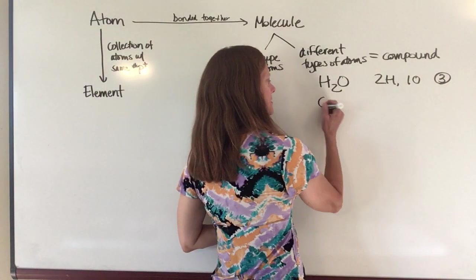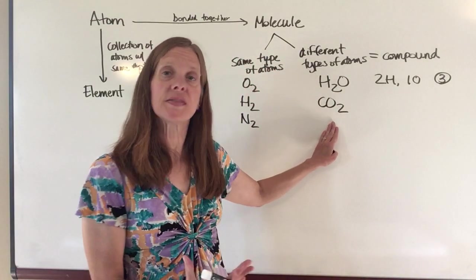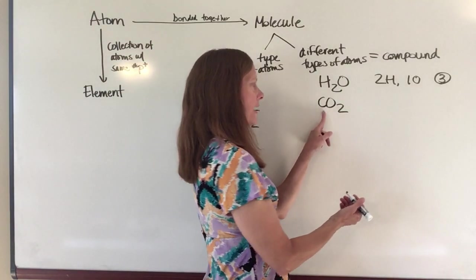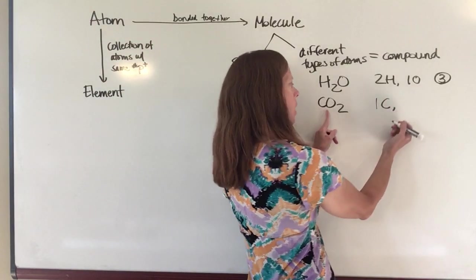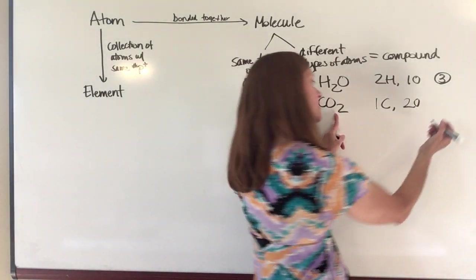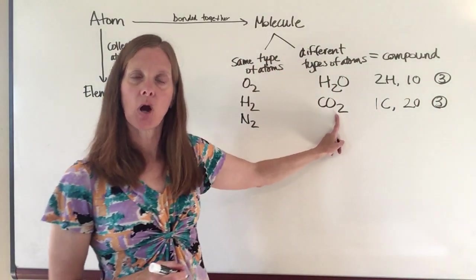Another example is CO2, carbon dioxide, the air that you breathe out all of the time as waste. So in carbon dioxide, there's no subscript here. So you're going to have one carbon atom and you're going to have two oxygen atoms. Once again, we're going to have a total of three atoms in a molecule of carbon dioxide.